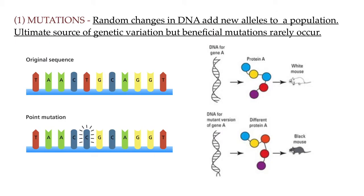So let's start with mutations, the ultimate source of genetic variation in a population. Evolution is all about change in inherited traits over time. So that means that the physical and behavioral changes that make evolution possible happen only when the DNA code for a gene changes. And these changes are called mutations.